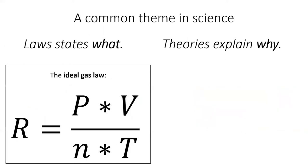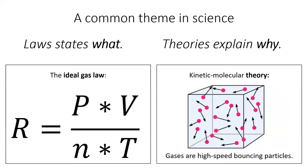The ideal gas law describes any ideal gas using just four variables, but it doesn't explain why gases behave ideally. Explaining something is the job of a theory. In this case, it's the job of kinetic molecular theory, which describes gases as high-speed bouncing balls.